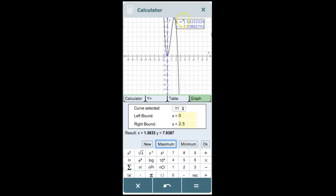And the coordinates of the point will appear. Rounding to two decimal places, we see that the point is 1.58, 7.94. What does this mean? This means that the maximum volume is 7.94 cubic inches, and that the x value that maximizes this volume is 1.58 inches.